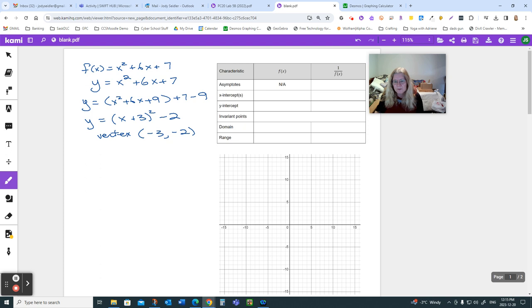So I can go ahead and put a point at negative 3, negative 2. I know this opens up from there. So there's going to be two x-intercepts, for instance. There's definitely going to be a y-intercept, which we have to find for this chart.